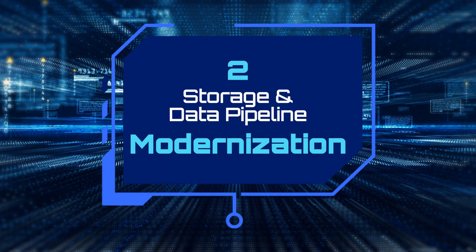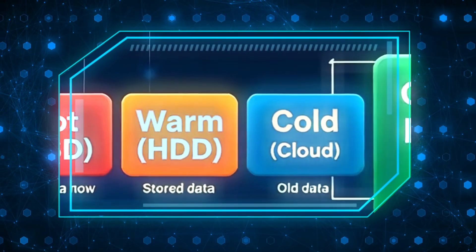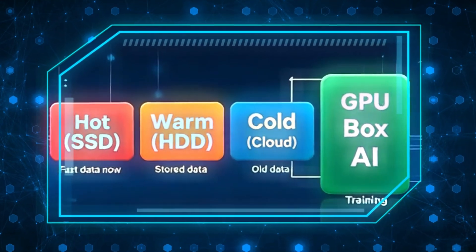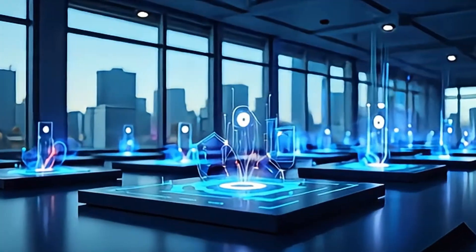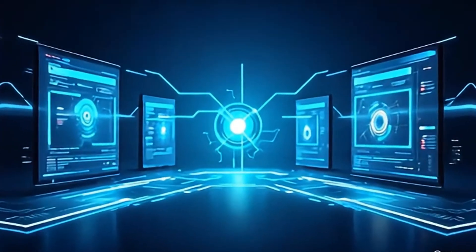Second, storage and data pipeline modernization. They're shifting to tiered storage—SSD-backed hot data for active training batches, HDD for archives, and cold object storage for long-term retention. The data ingestion layer uses streaming pre-fetch to keep GPUs saturated even during complex multimodal training runs.